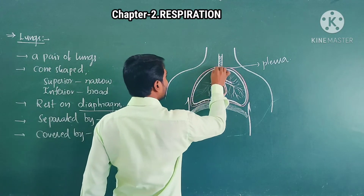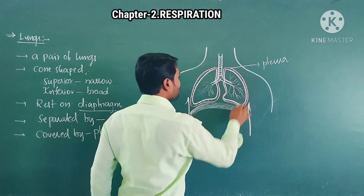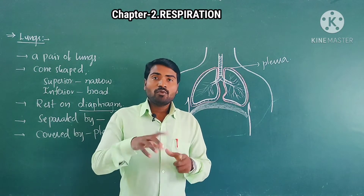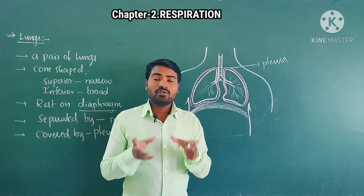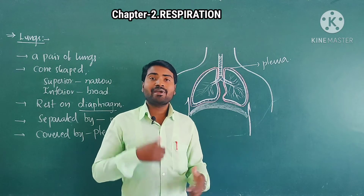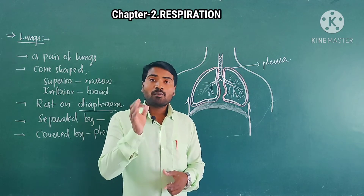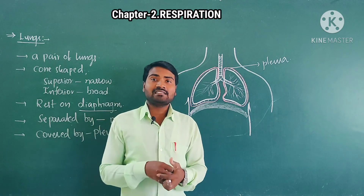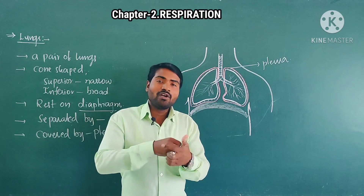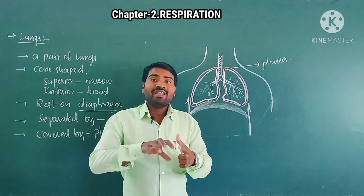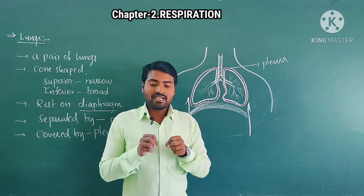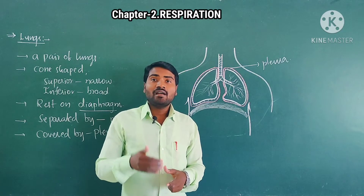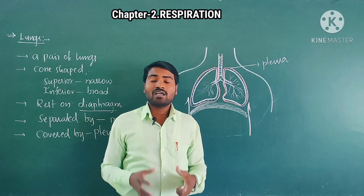The pleura is filled with fluid called pleural fluid. This pleural fluid gives protection to the lungs from mechanical sharp-side injuries. It reduces the friction between the thoracic cavity and the lungs, so the lungs can move very freely into the thoracic cavity, making it easy to expand and contract.